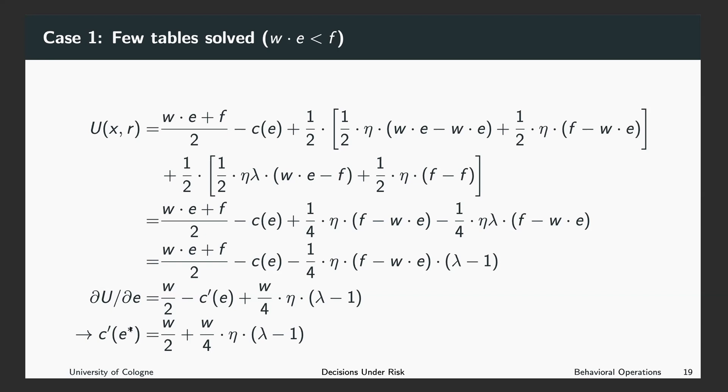Remember that we are in the case where we solved few tables, which means E is rather small because W times E is still smaller than F. When we now look at the effect of loss aversion on the optimal level of effort provision, what we can see is that increasing the importance of loss aversion, which means either increasing eta or increasing lambda, implies that we want to exert more effort.